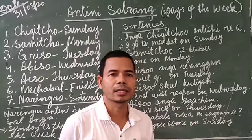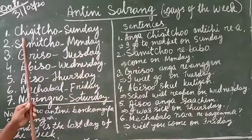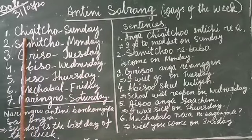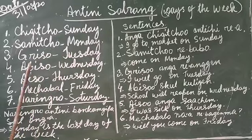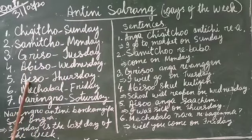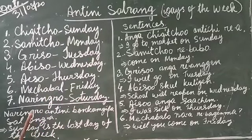Shigucho means Sunday, samucho means Monday, greenso means Tuesday, abiso means Wednesday, ayiso means Thursday, mechabal means Friday, naramuro means Saturday. These are the seven names of the days of the week.